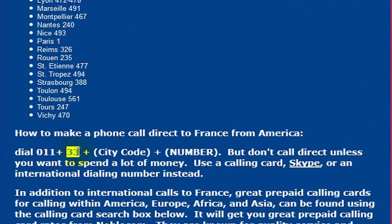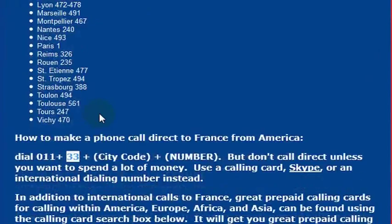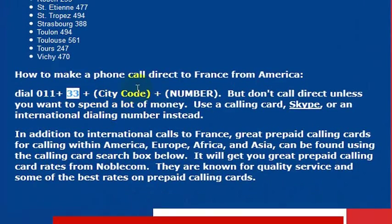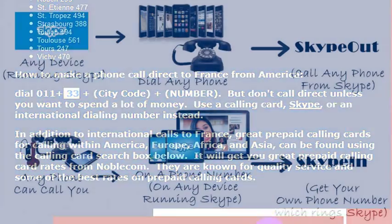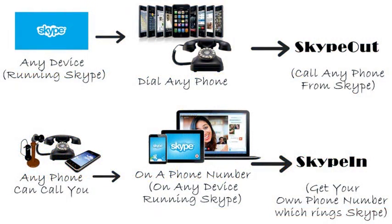The country code for France is 33, and if you wanted to reach France, what you would do is dial 011, then 33, and then you would call the number that you were calling, which includes a city code and then a number. So again, the country code for France is 33, but I wouldn't really recommend calling direct.